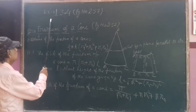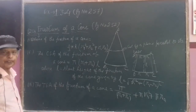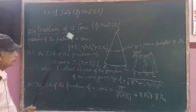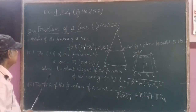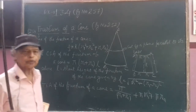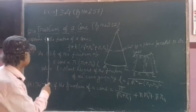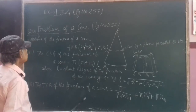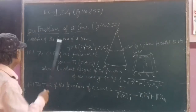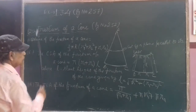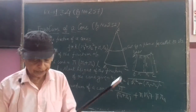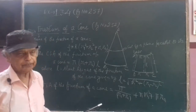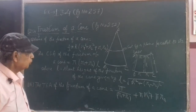But before going directly to the exercise and solving the problem, I will discuss a shape that is cut out from a cone. That is called frustum of a cone. You will find it on page number 252. This whole exercise is based on the frustum of a cone. First I will tell you what it is, then slowly I will develop some formulas. I will not prove them, but I will write the formulas, because the proof is very lengthy.